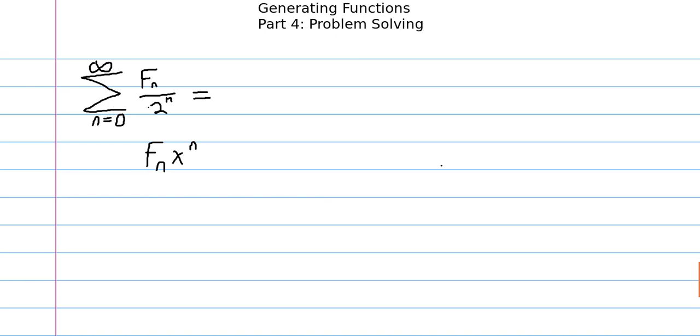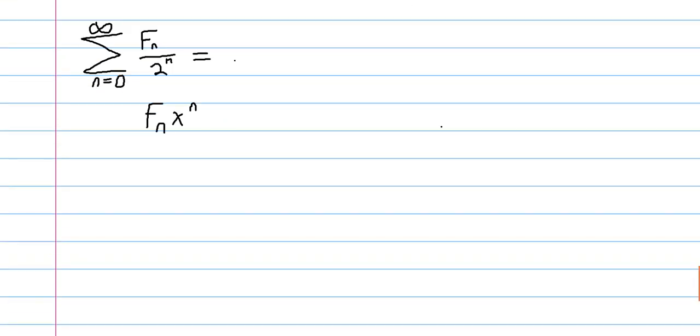And so in our case, we're plugging in one half. So what we actually have here is, if you remember the generating function for the Fibonacci numbers, but we're plugging in one half. So the Fibonacci generating function is x over one minus x minus x squared.